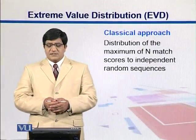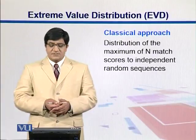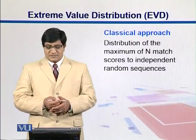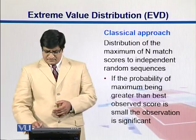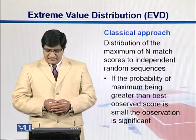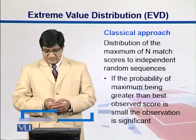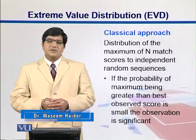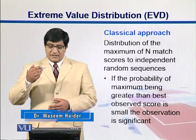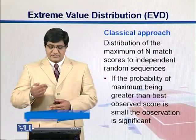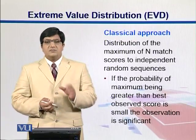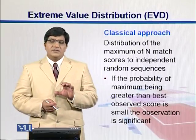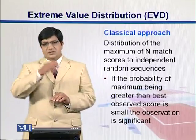Extreme value distribution is a classical approach. It is the distribution of maximum of n match scores to independent random sequences. If the probability of the maximum being greater than the best observed score is small, then the observation is significant. In order to have those probabilities, we generally look at the left tails of those distributions.